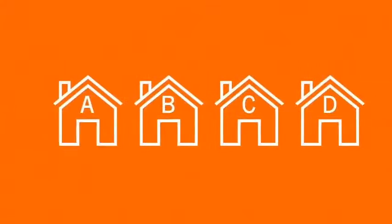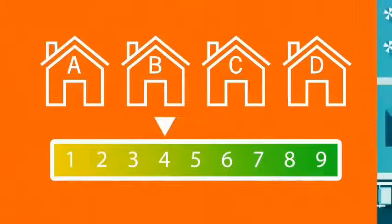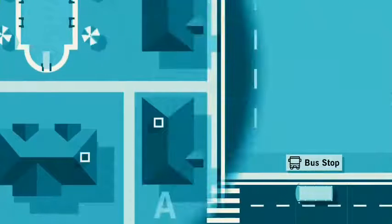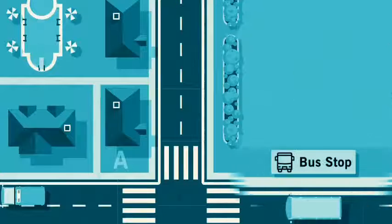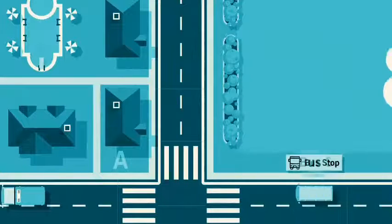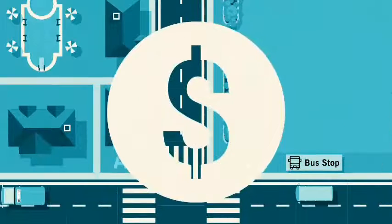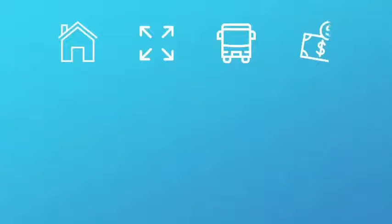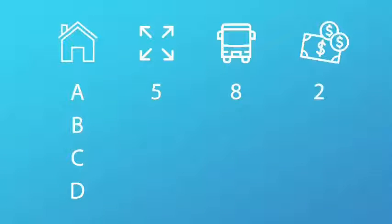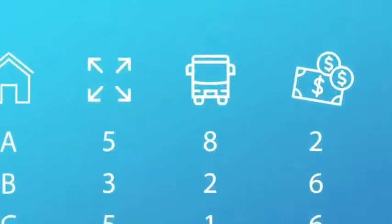You assign scores to these four options with respect to each one of these criteria. For example, you need to decide how good option A is with regard to size and assign it a score. Then you need to decide how good it is with regard to accessibility and assign it a score. Finally, you need to decide how good it is in terms of affordability and assign it a score. After you've assigned scores for the first option, you need to do the same for all the other options, thereby determining scores for all options with respect to these three criteria.